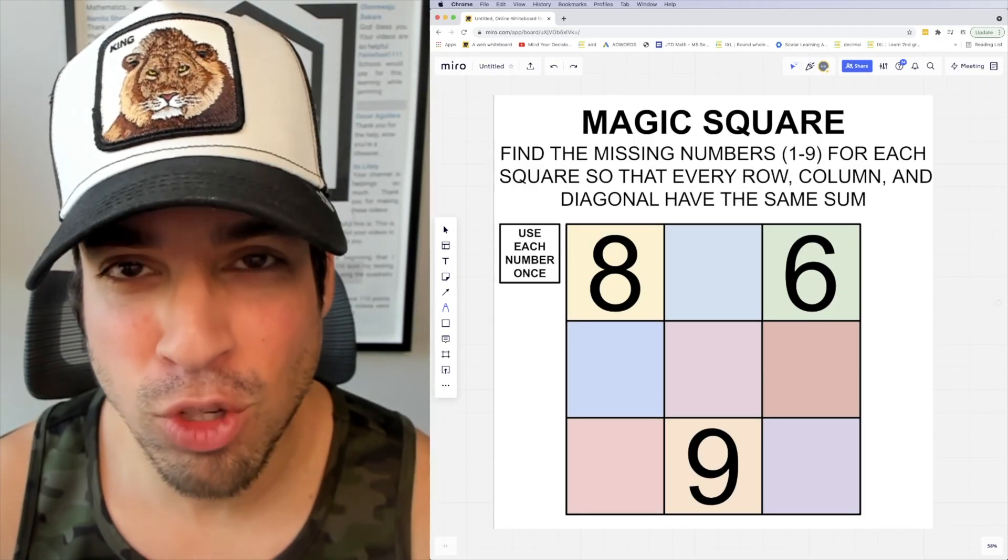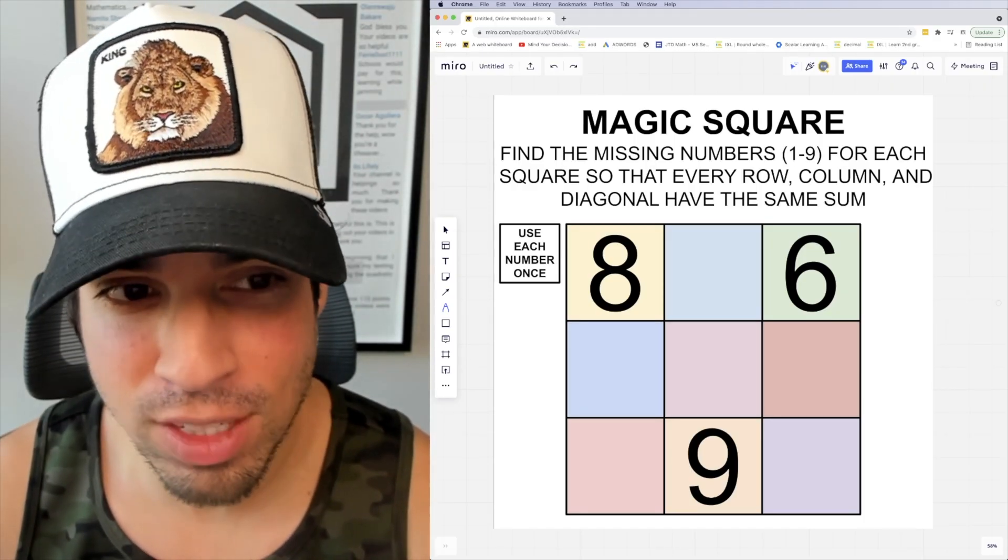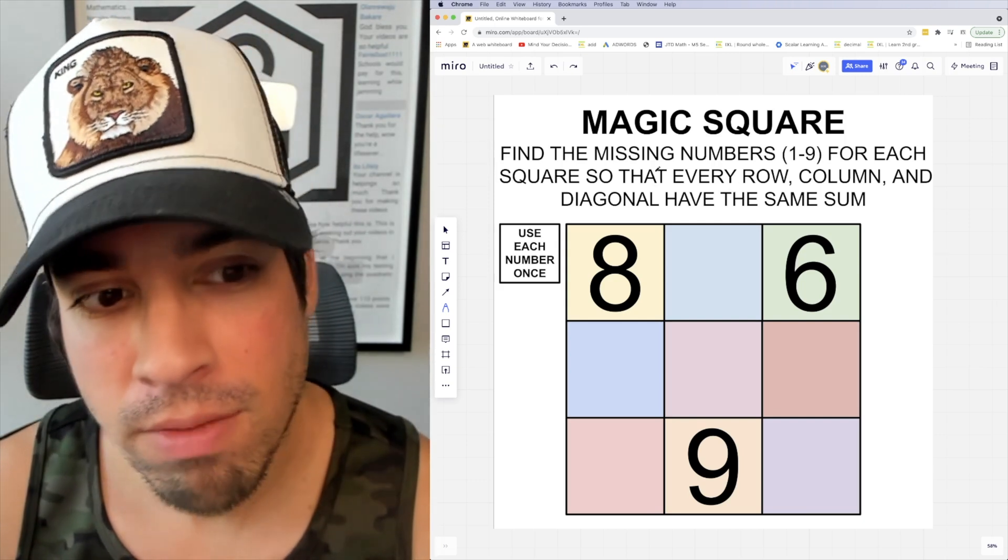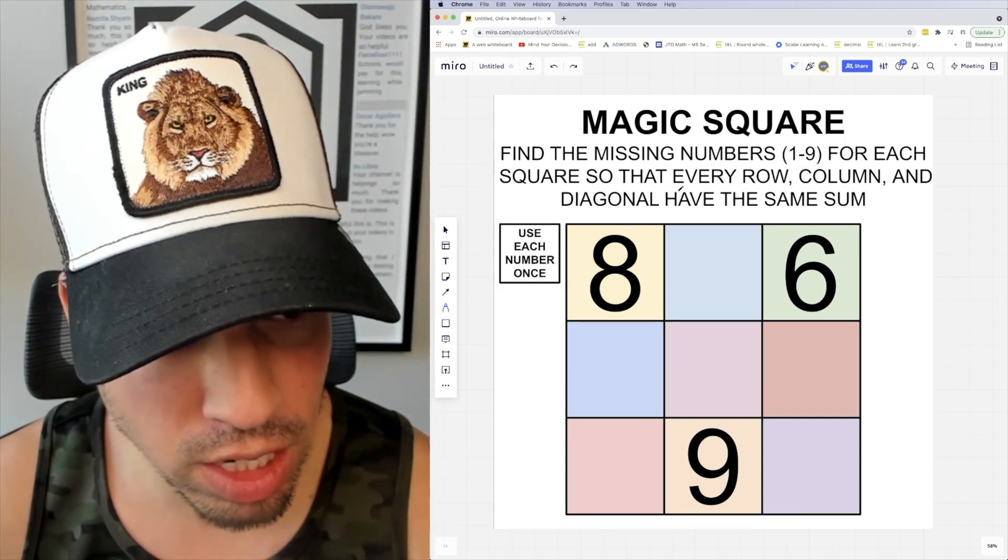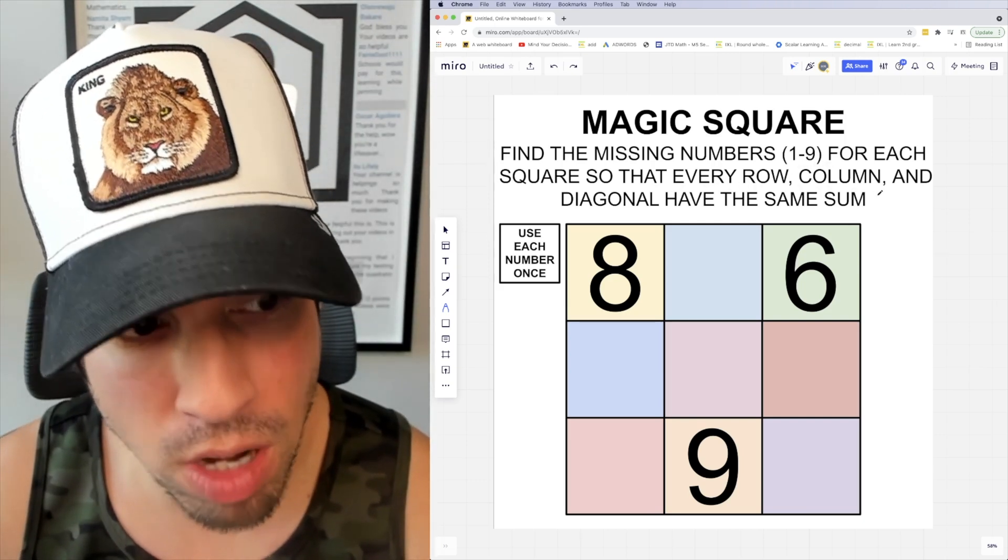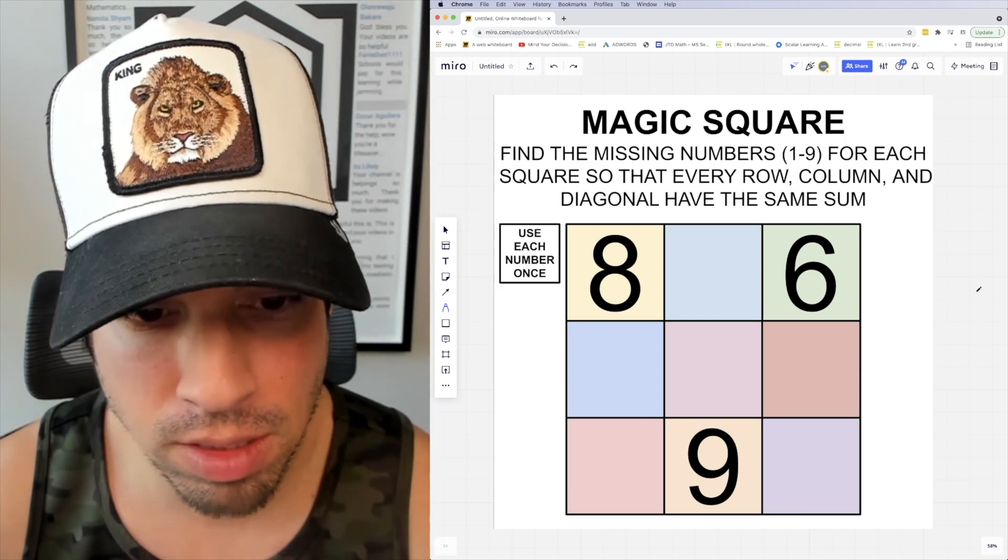What's up everybody and welcome back to another math puzzle. In this one, the question is as follows: find the missing numbers from one through nine for each square so that every row, column, and diagonal have the same sum.